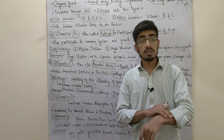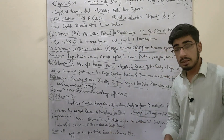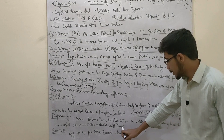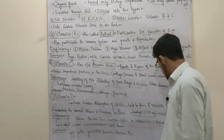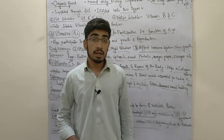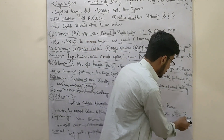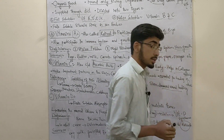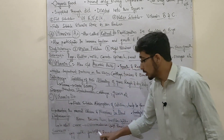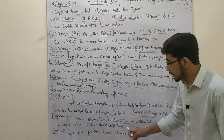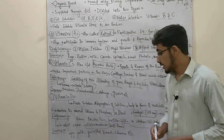If there is melanin present, it can affect vitamin D synthesis. Vitamin D deficiency leads to rickets. A severe deficiency causes the bones to weaken and leads to skeletal deformity.